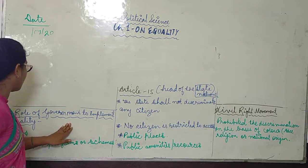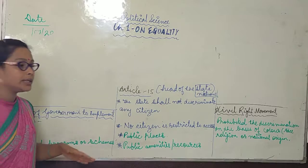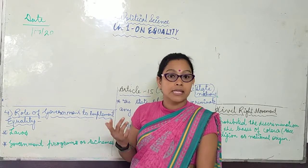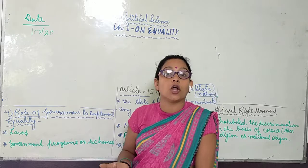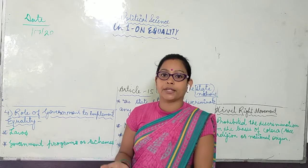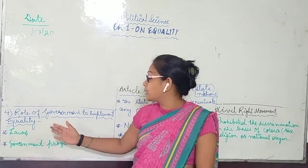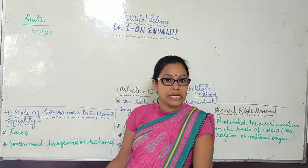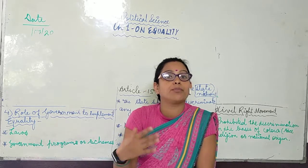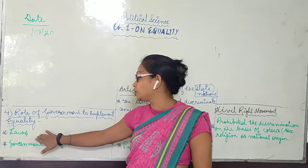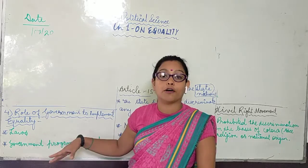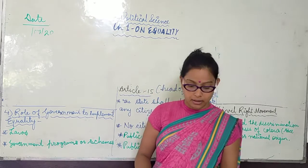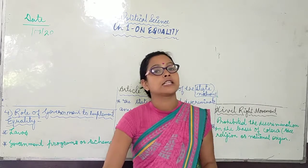Now the fourth topic: the role of the Indian government in implementing equality. What does our government do to ensure equality among all citizens? First, our government ensures and implements laws. If somebody discriminates or treats another person unequally, there is a law under which the affected person can lodge an FIR and make a complaint. Our government ensures laws to protect the equality of every citizen. Second, the government initiates programs and schemes.